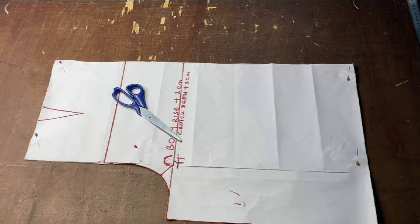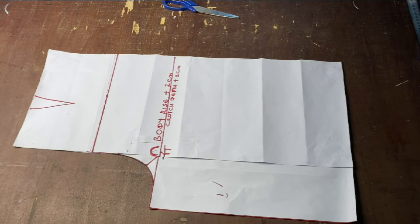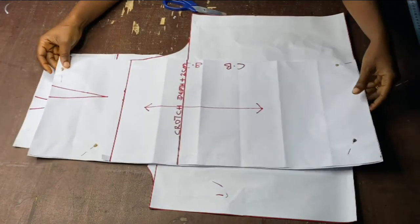This is my front pattern. I cut two pieces on my fabric. And this is the back pattern. I also cut two pieces on the fabric.